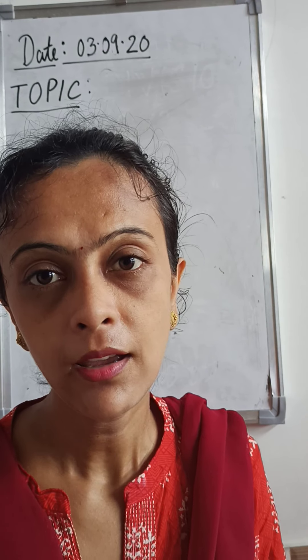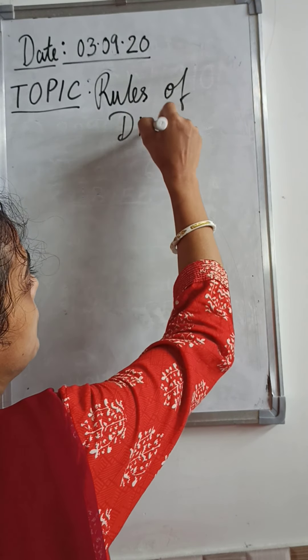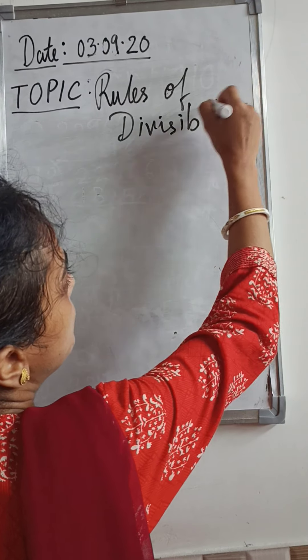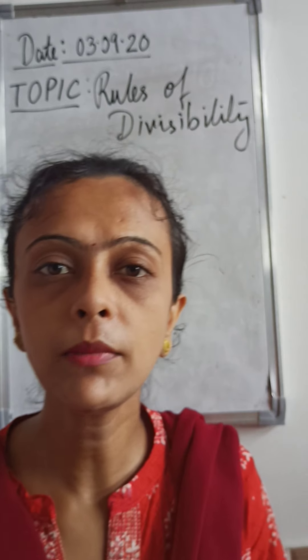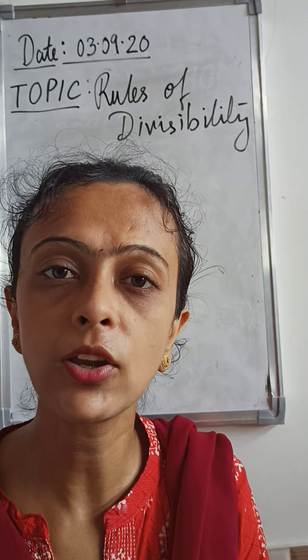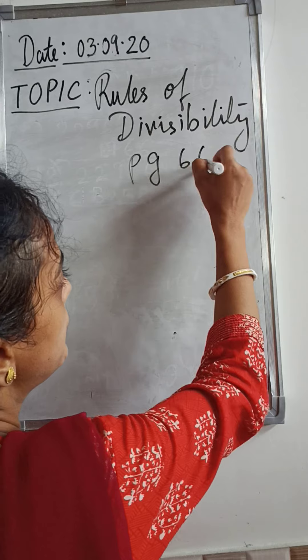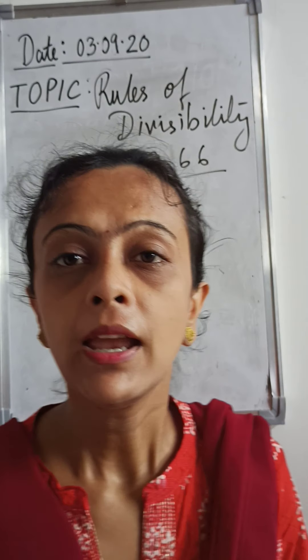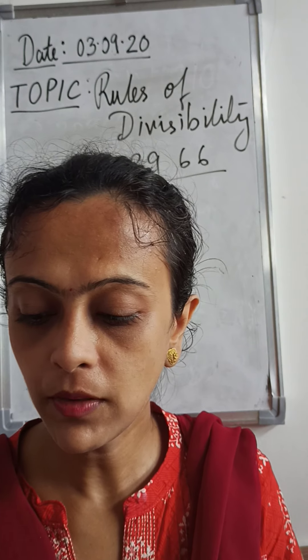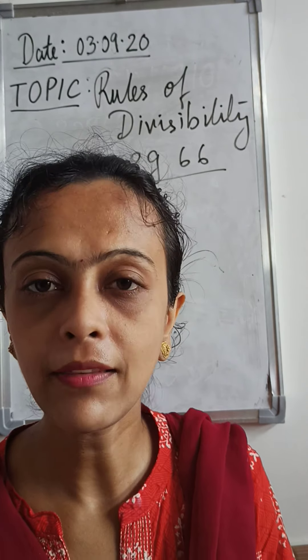Our topic is Rules of Divisibility. There are some rules of divisibility which are used to test whether a number is divisible by another number or not. You need to remember the rules. They are given on page number 66 of your book. Divisibility rules are used for testing whether a number is divisible by another number without actually dividing it.